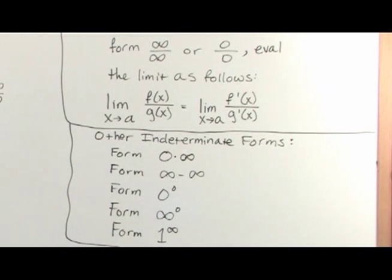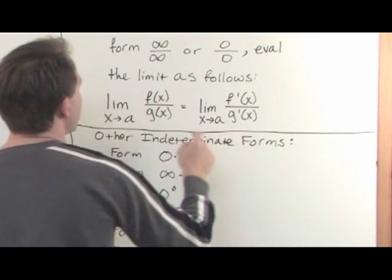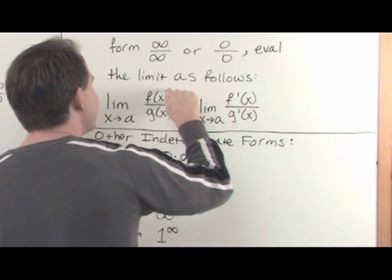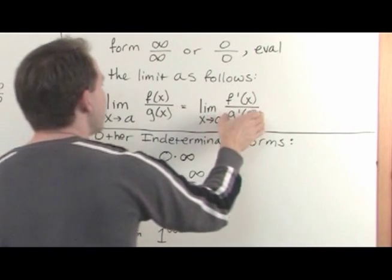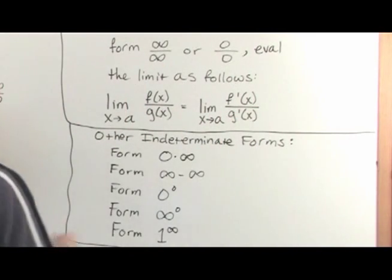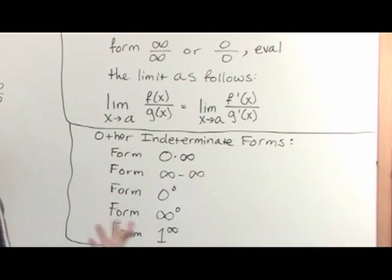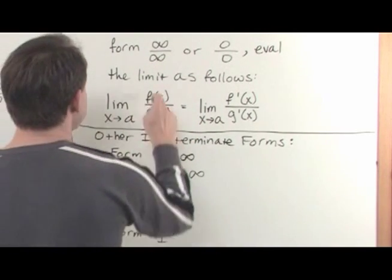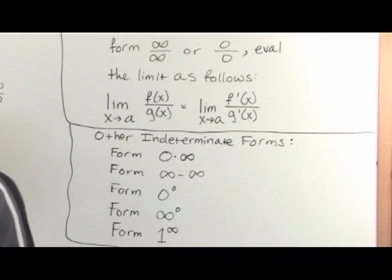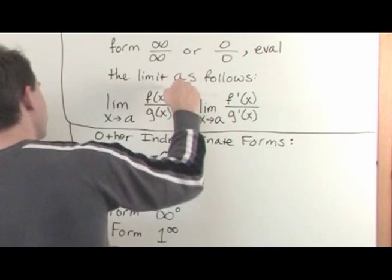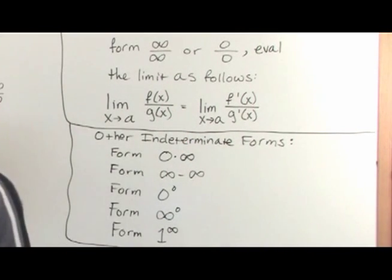One more thing I want to tell you before we dive into some problems. When you take these derivatives of the top and the bottom, you're taking the derivative of the top function as a single unit and the derivative of the bottom function as a single unit. You are not taking the derivative of the quotient of these two things, because if you remember from basic calculus, that's the much more complicated quotient rule: bottom times the derivative of the top, minus top times the derivative of the bottom, over the bottom squared. That's not what we're doing here.